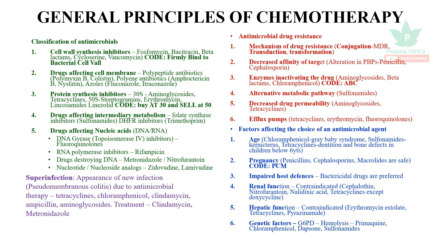Superinfection is the appearance of a new infection, such as pseudomembranous colitis, due to antimicrobial therapy with tetracyclines, chloramphenicol, clindamycin, ampicillin, or aminoglycosides. It is usually treated with vancomycin and metronidazole.